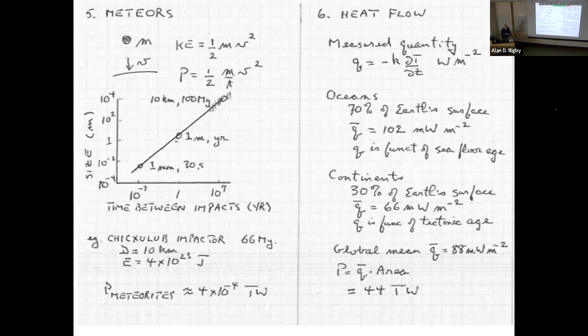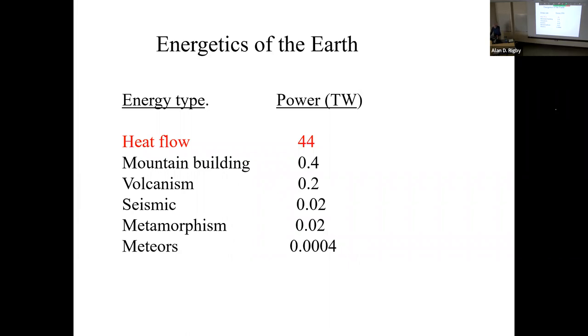Finally, this on the right-hand side is the only one of these energy fluxes that we actually measure, because we measure heat flow. If you measure heat flow in the oceans and then the continents and just integrate up, you get 44 terawatts. So we can put all of these into a table. Here's the poor meteorites at the bottom going up and heat flow at the top. What do you read into this table? It's basically that the Earth is a heat engine. Heat is driving tectonics, and tectonics is causing earthquakes, metamorphism, volcanism, and so forth. Heat is the driver here.